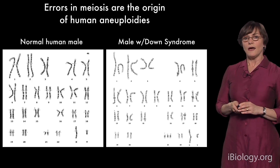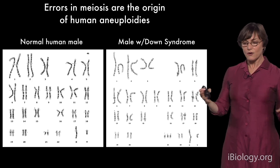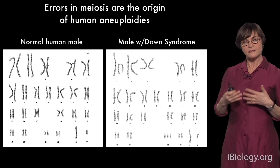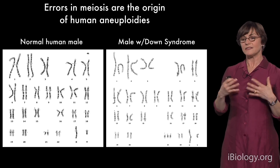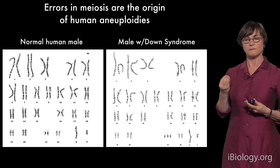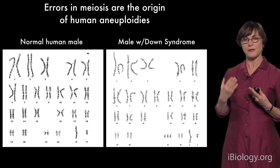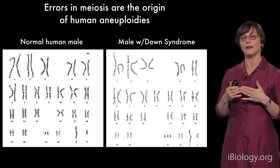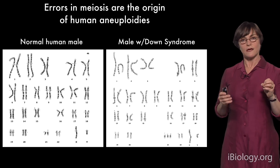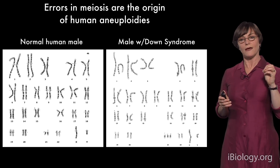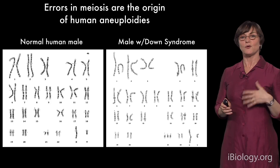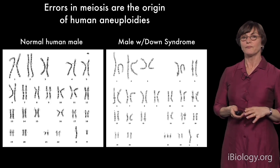We want to understand how chromosome segregation events occur and what regulates the whole process. It's very difficult to study in humans, partly because all meiotic events — pairing and recombination — happen in the ovaries when a fetus is still in utero, which makes them inaccessible.